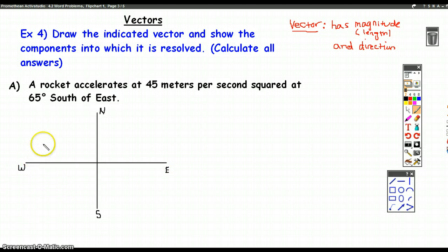This says that the rocket accelerates at 45 meters per second squared at 65 degrees south of east. So 65 degrees south of east means that if I'm facing this direction right here, facing east, I'm going to go 65 degrees south of that.